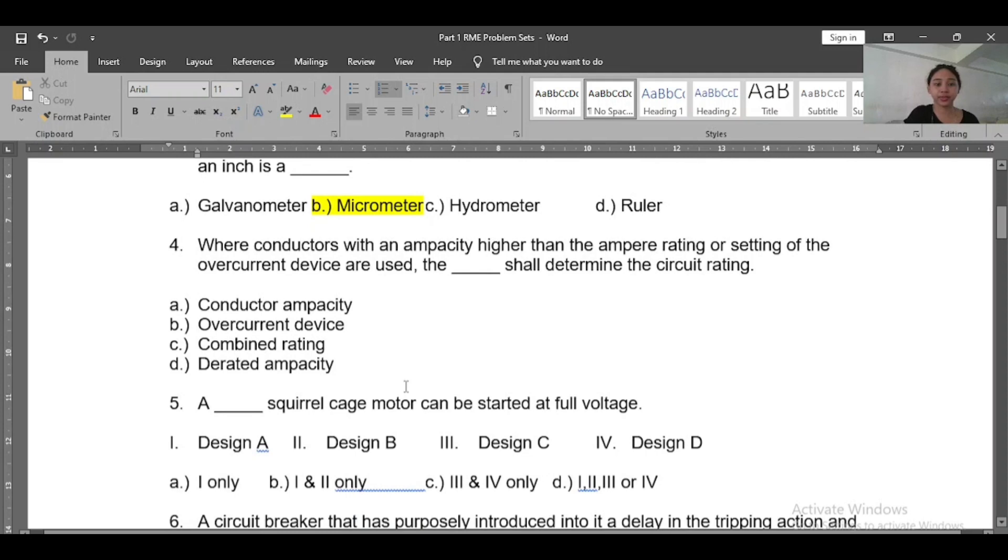Number four: Where conductors with an ampacity higher than the ampere rating or setting of the overcurrent device are used, the blank shall determine the circuit rating. So what's the answer? The answer is the overcurrent device.